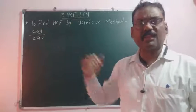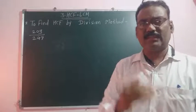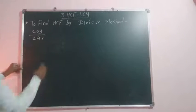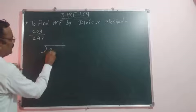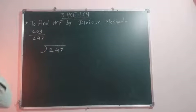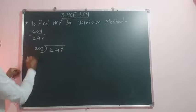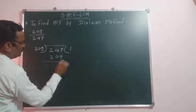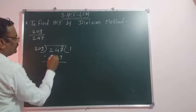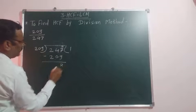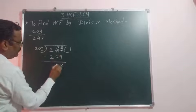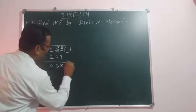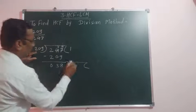The smaller number is 209 and bigger number is 247. Divide here 247 by 209. So 209 ones are 209. Subtract it. Here we get 17. So 17 minus 9 is 8. Here we get 3, 38.